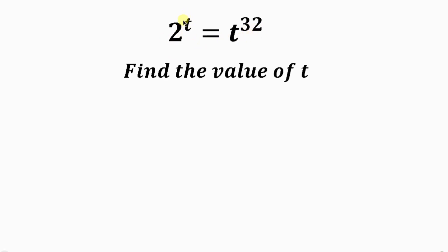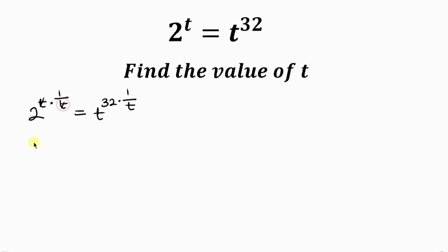Our first step will be to get rid of the t exponent, and we do that by multiplying the exponent by 1 over t — we do that to both sides. So we have 2 to the t, multiply the exponent by 1 over t, equal to t to the 32 multiplied by 1 over t. This t cancels out that t, leaving 2 on the left equal to t to the 32 over t.